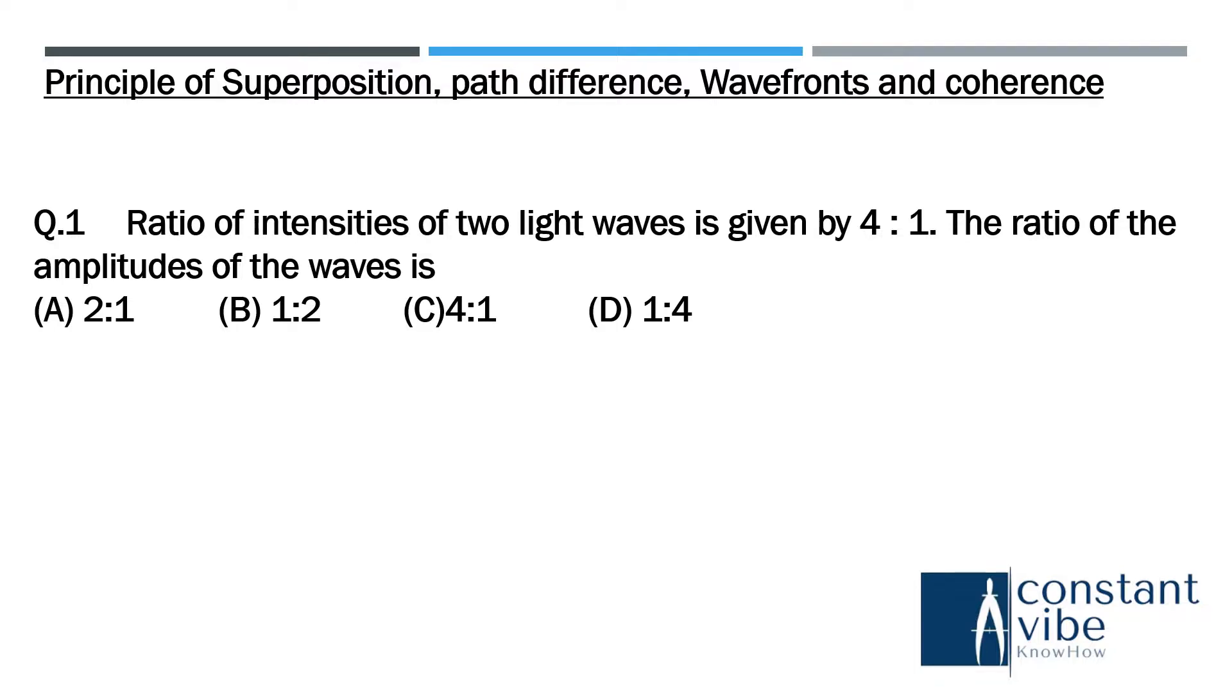Covered part here. Question number 1: ratio of intensity of two light waves is given 4 is to 1. The ratio of the amplitude of the wave is 2 is to 1.